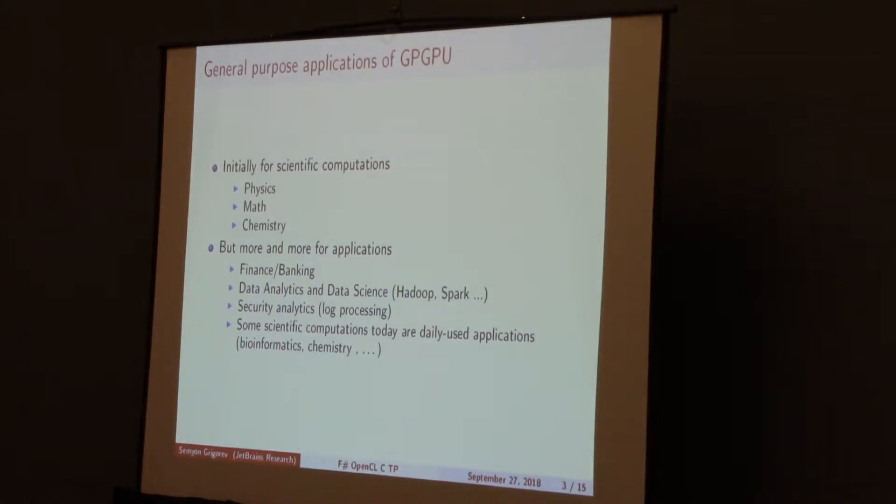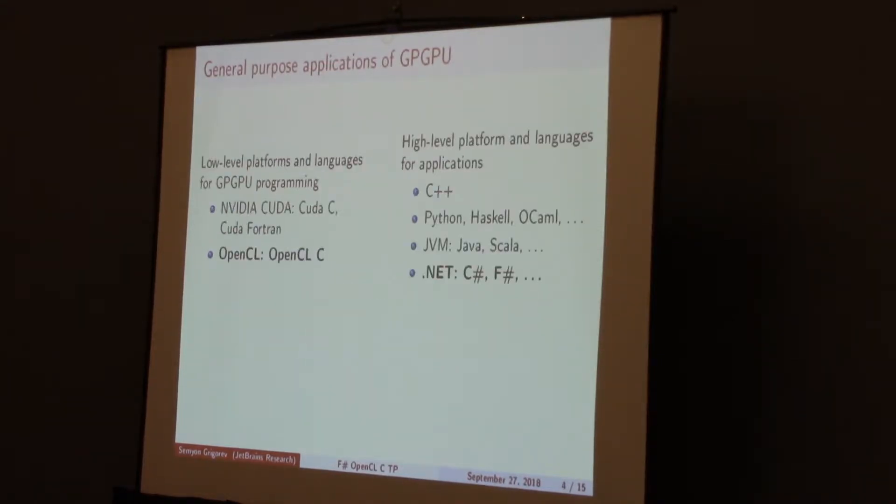The initial field of general-purpose computations on GPU is scientific computations. But today we can find a big number of data-intensive applications which want to utilize GPUs for performance reasons. For example, in security, we want to use it for analyzing a huge amount of logs, network metrics, and so on. Another example is biological sequence analysis, for example, genome analysis.